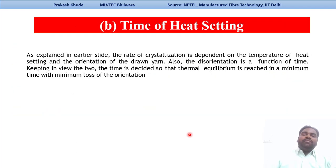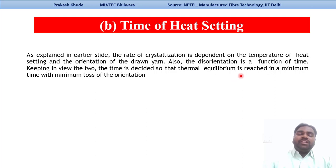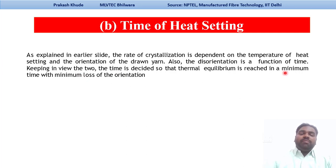The next parameter is time of heat setting. The rate of crystallization depends on the temperature of heat setting and the orientation of drawn yarn, and disorientation is also a function of time. Time is a deciding factor — thermal equilibrium should be reached in minimum time with minimum loss of orientation.